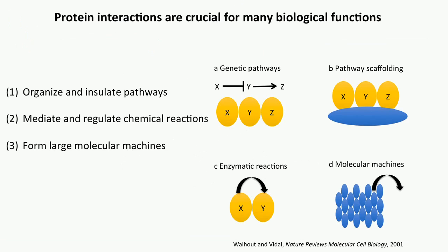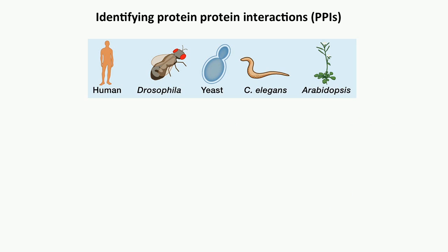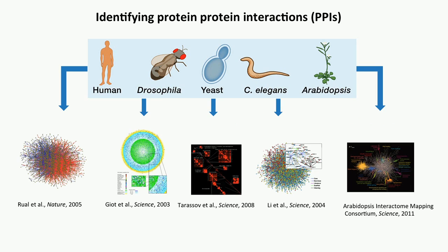Protein interactions are very important for many biological functions. They can help organize and insulate synchronized pathways, mediate and regulate chemical reactions, and help form larger molecular machines to mediate various cellular activities. Therefore, a large number of protein studies have been focused on identifying protein-protein interactions in different species, and the corresponding protein interaction networks have been constructed in those species.